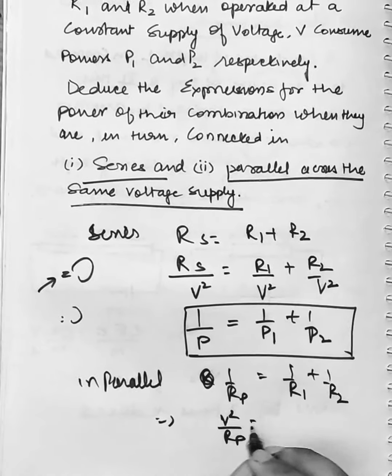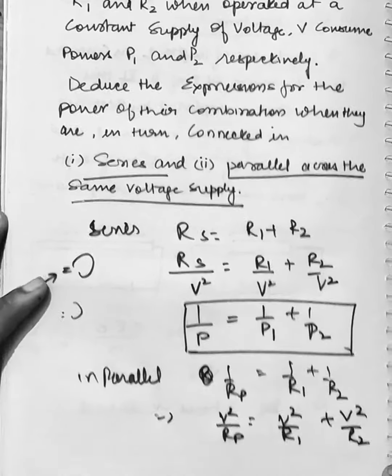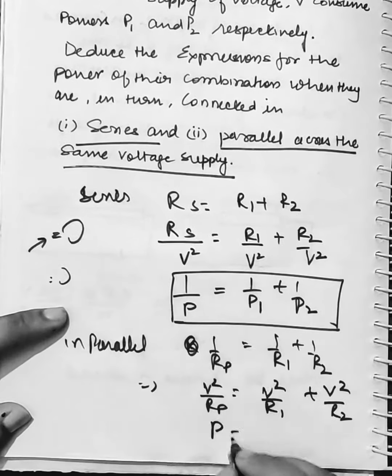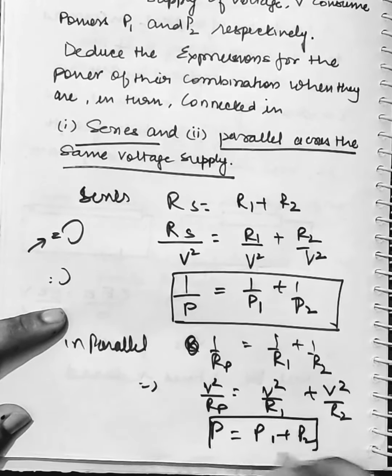If we take care of the same voltage source, we can do it. So what is the answer? Power in parallel equals P1 plus P2. These results are very important.